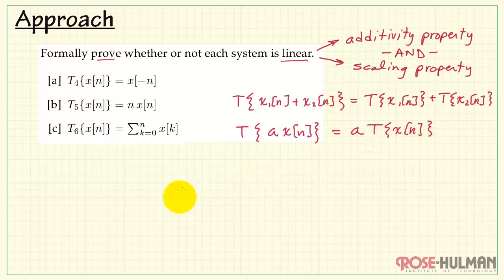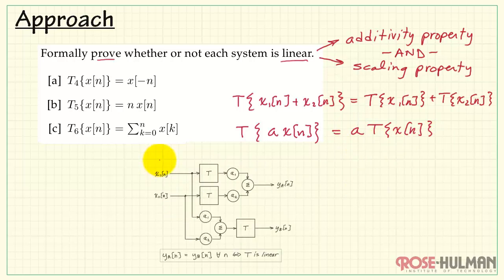We can combine both the additivity and scaling properties into this proof structure. Here we have the two instances of the system operating on two different signals, X1 and X2. Here we have the scaled versions that are being added together to form YA of N. In a similar way, we can pre-scale and then add, pass that through the system, and form YB. Then we ask ourselves the question, is YA equal to YB? And if so, we say that system T is linear.